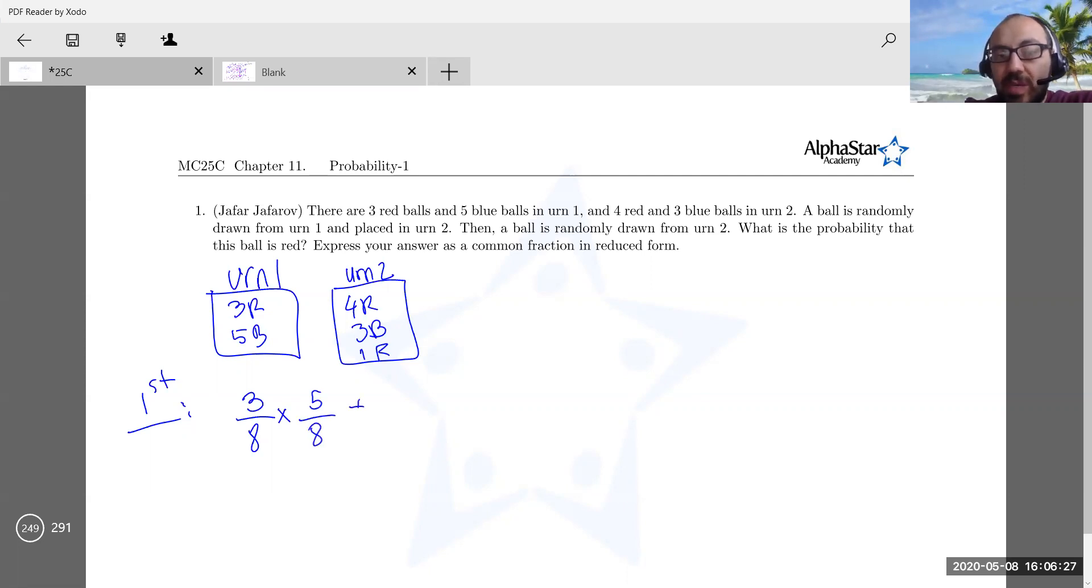This is the probability of red-red happening. If the first one is blue with a chance of 5/8, the second one is red now, this is blue now, so four out of eight balls are red. If you add those 15 and 20 out of 64, you get 35 out of 64. It's pretty straightforward, right? You look at both possibilities, multiply the probabilities and add them.